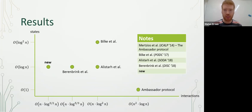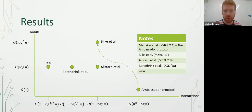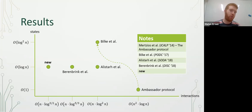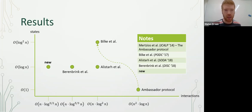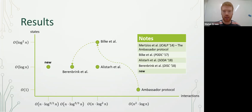Here is a graph that summarizes some of the results we have. We will start with the ambassador protocol, which has only O(1) states per node; however, it is a very slow protocol. Then we will proceed to Bilk et al.'s protocol, which is much faster but takes O(log² n) states per node. We will skip Alistar et al.'s state improvement and go straight to Bernbrink et al.'s contribution, and finish with our new protocol.